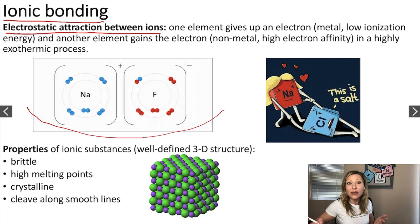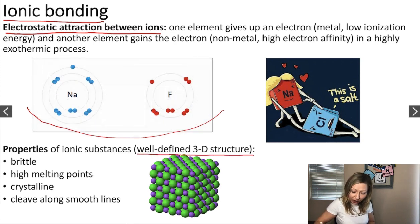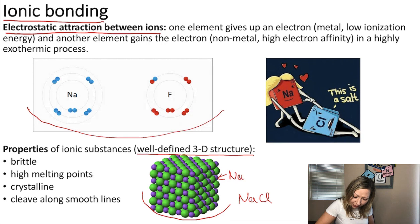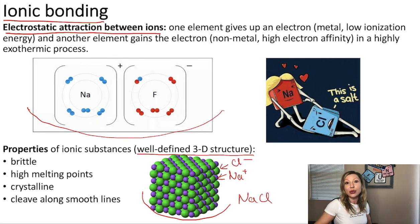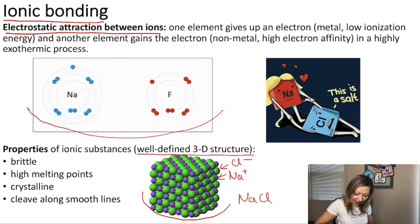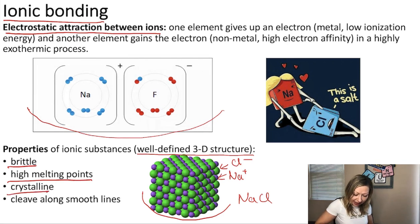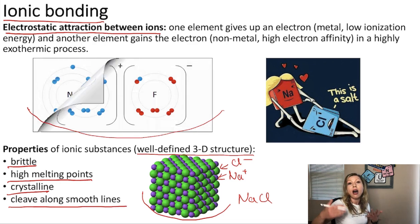So what are the properties of ionic substances? They have a really well-defined 3D structure, as is visible here. For example, for sodium chloride, the sodium ions are represented with the purple spheres and the chloride ions are represented with the green spheres. From here, it makes sense that these structures are actually brittle. They have high melting points, so they are extremely stable. They are crystalline and they are going to cleave along smooth lines.